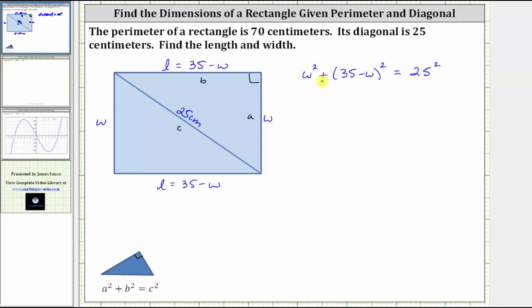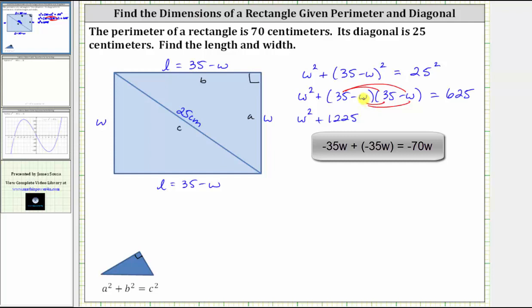Now we will simplify and solve for W. We have W squared plus two factors of 35 minus W equals 25 squared, which is 625. Now let's multiply the two binomials, where we have four products. We have W squared plus 35 times 35 is 1,225. And then we have 35 times negative W, which is negative 35W. And then this product also gives us a negative 35W, so we have minus 70W. And then negative W times negative W is W squared, so we have plus W squared equals 625.